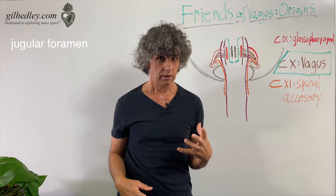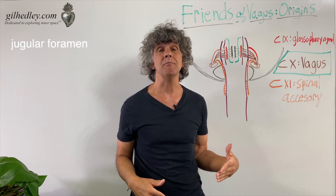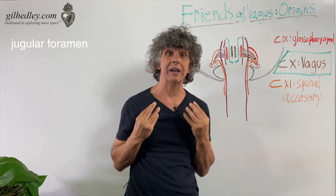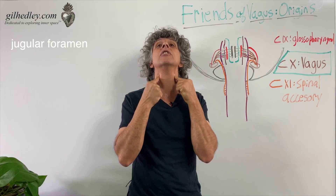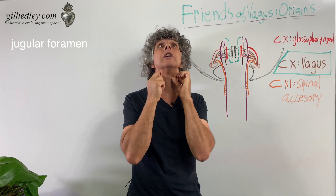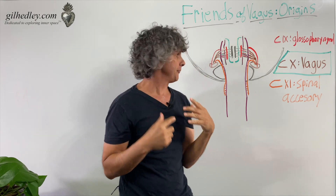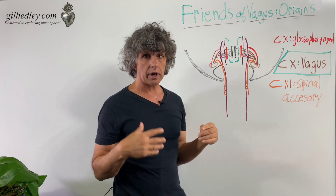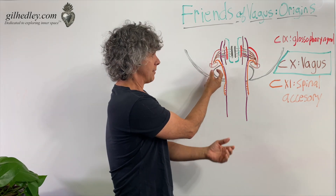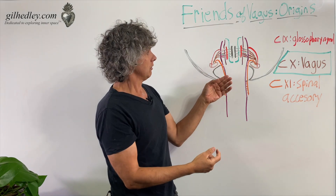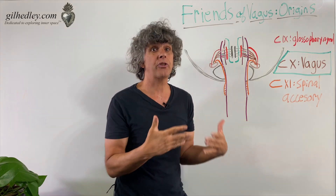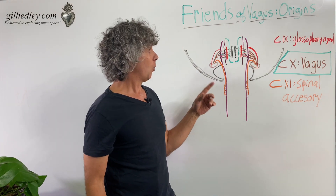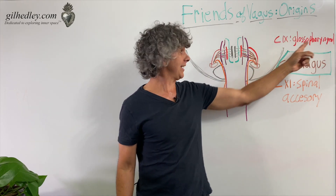That kidney-bean-shaped opening is called the jugular foramen. It takes its name from the internal jugular vein, which drains right through here — draining your head. But it's not alone; the jugular foramen is also the pass-through point for two other cranial nerves.